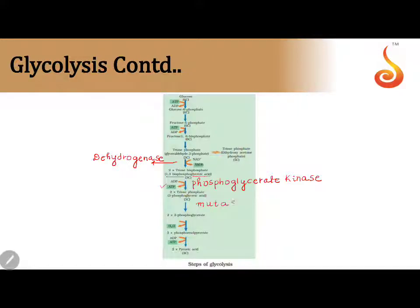2-phosphoglycerate under the action of enolase will change to phosphoenolpyruvate. Again, there is substrate-level phosphorylation here as well. Since we see ATP formation, this enzyme is pyruvate kinase.